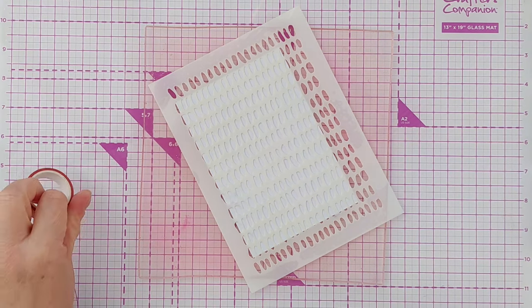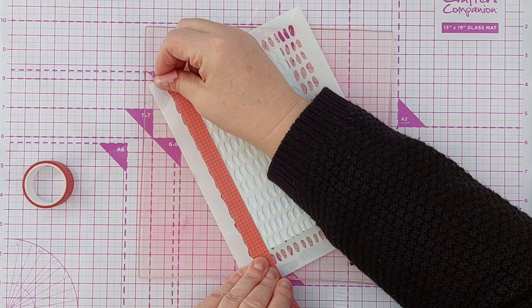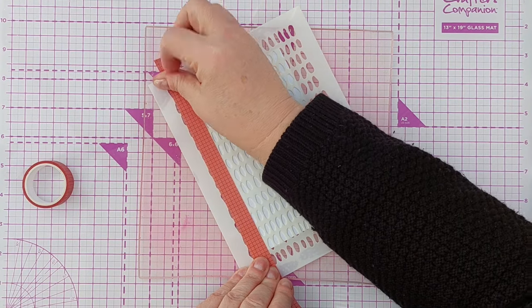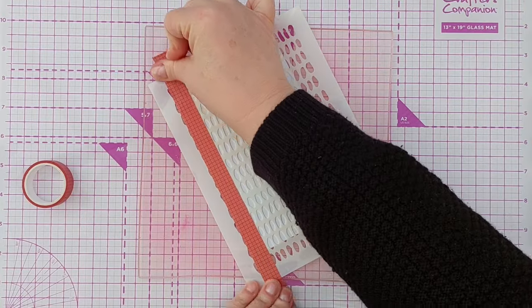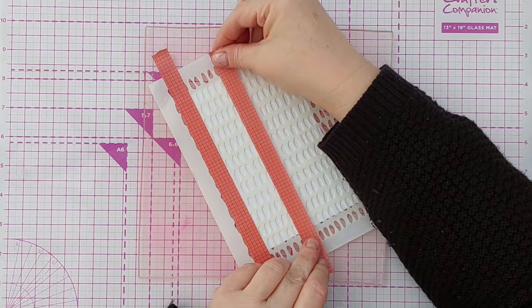I've popped it on my grip mat and laid a stencil over the top. I'm going to blend through the stencil but not over the whole card. I want to create a strip of stenciling down the left hand side.